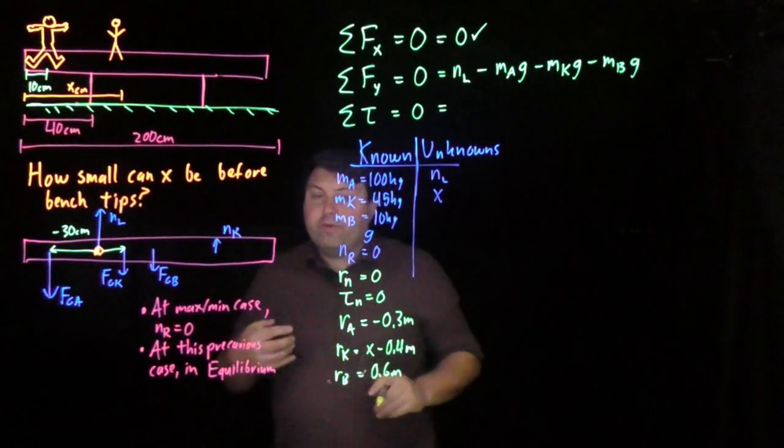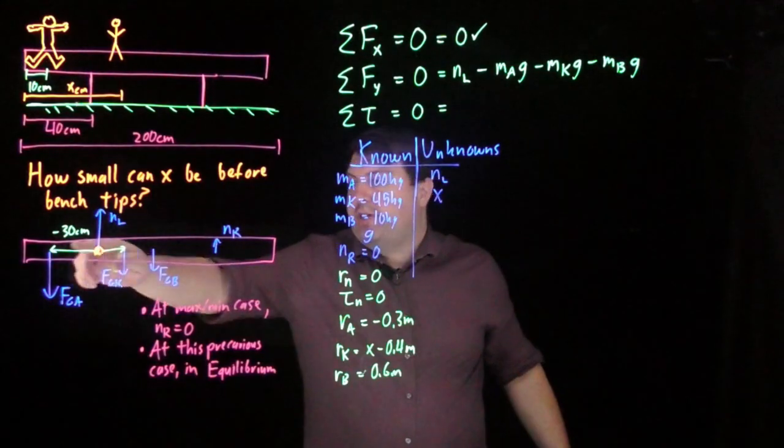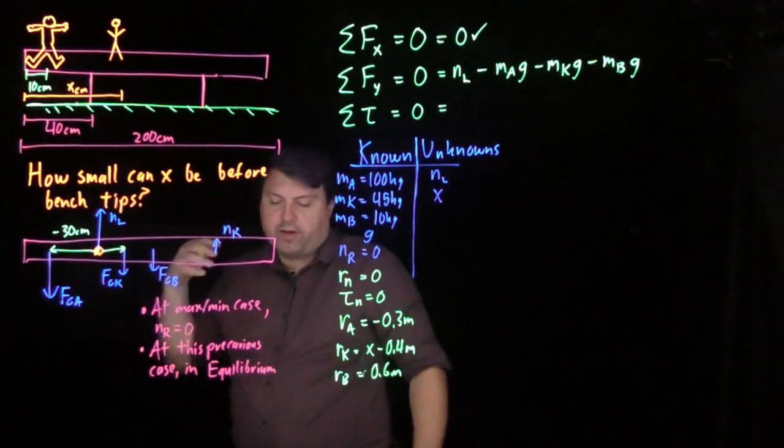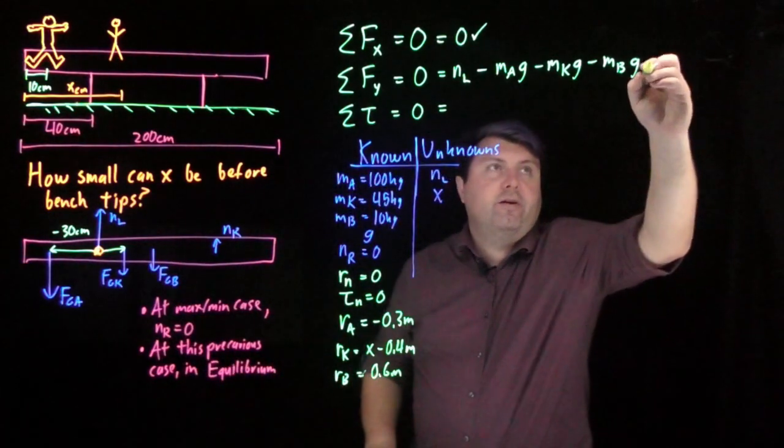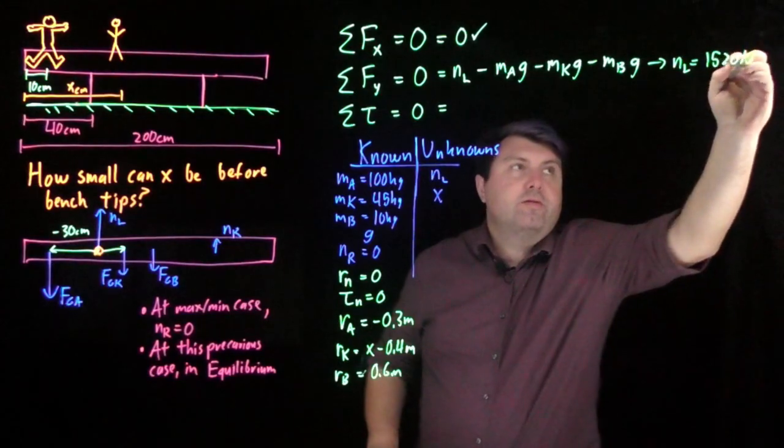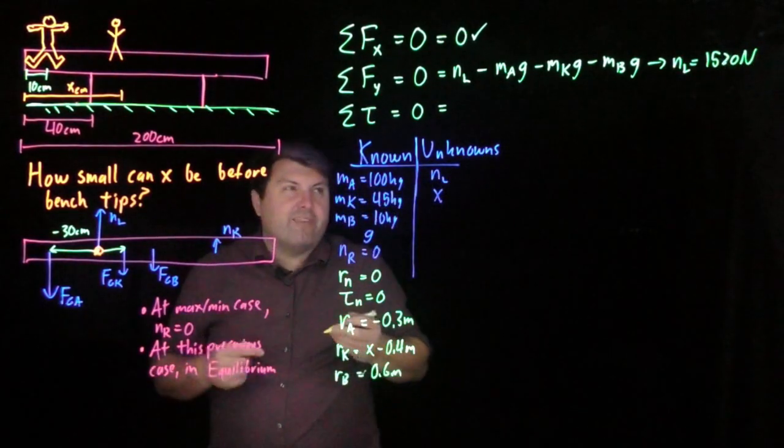Now, if we wanted to use any other point of rotation, we could use this sum of the forces in the y to solve for n sub l. In fact, if we're curious, this will give us that n sub l is 1520 newtons. But we're not really that curious.